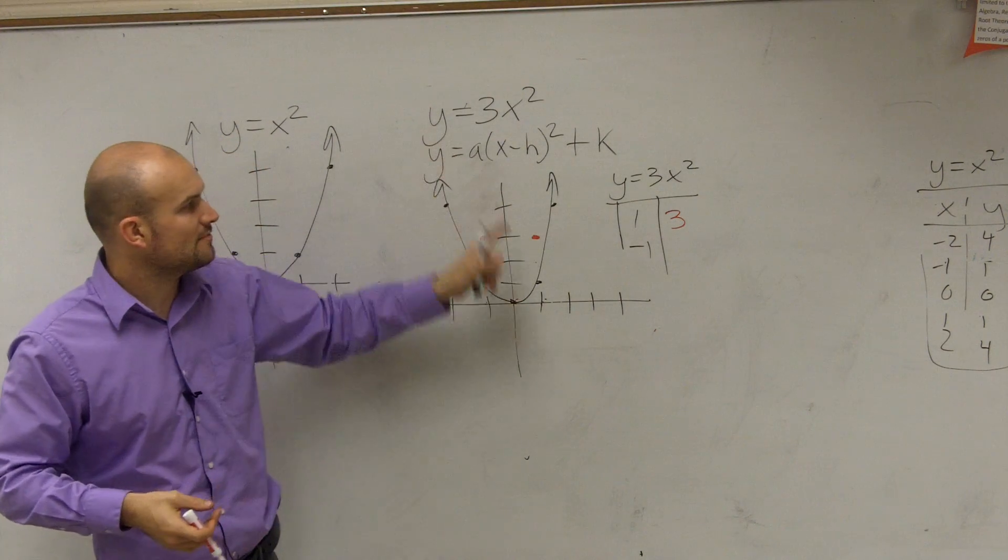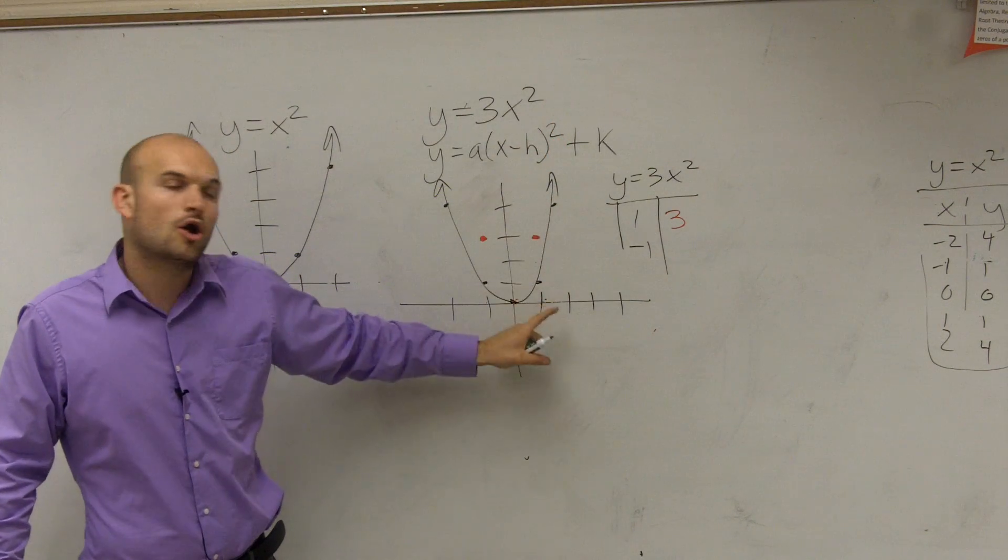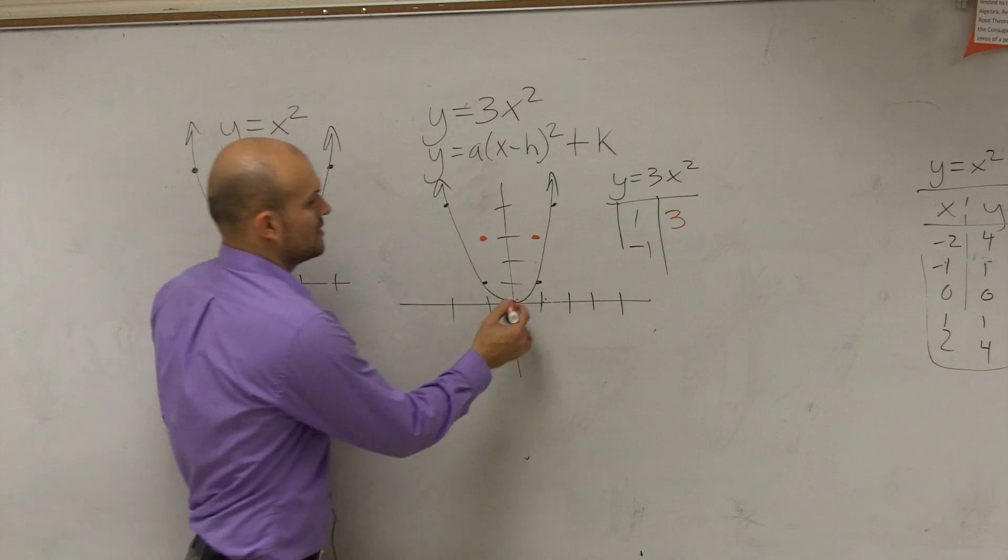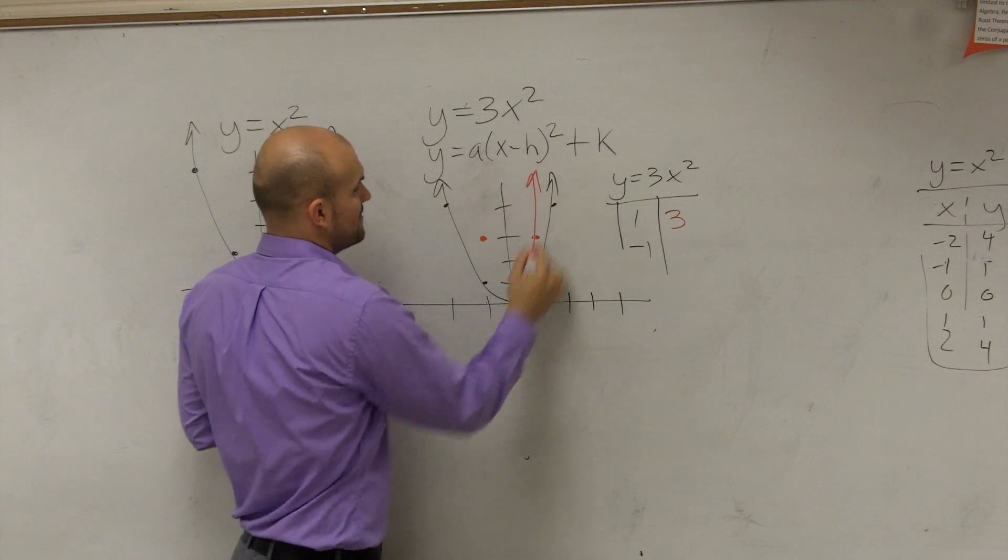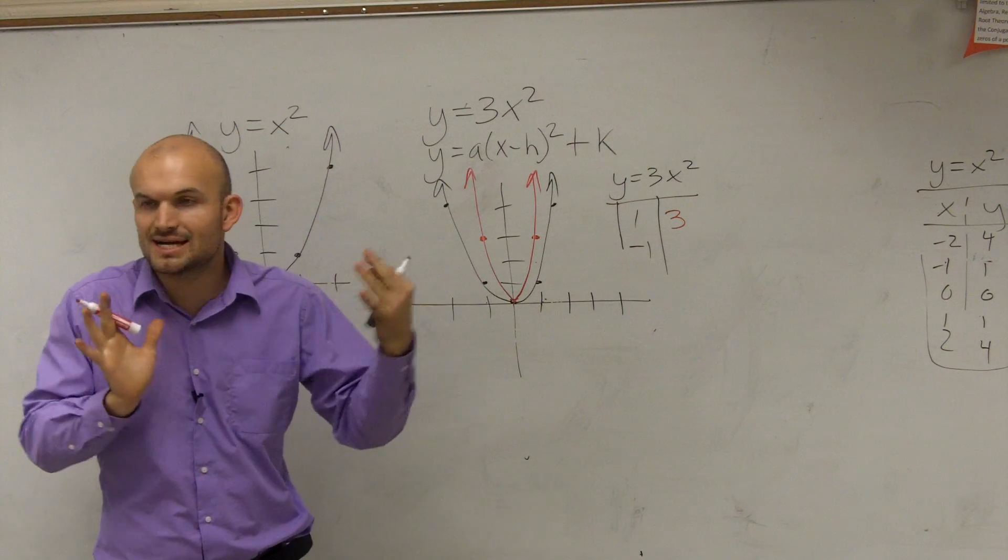And then you guys can do 2. It's going to be off my graph, but over 2 would be up 12. Over negative 2 would be up 12. So therefore, you can see that the graph gets skinnier, right? It's horizontally compressed.